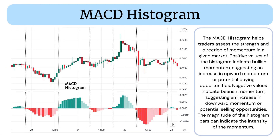The MCD Histogram helps traders assess the strength and direction of momentum in a given market. Positive values of the histogram indicate bullish momentum, suggesting an increase in upward momentum or potential buying opportunities. Negative values indicate bearish momentum, suggesting an increase in downward momentum or potential selling opportunities.